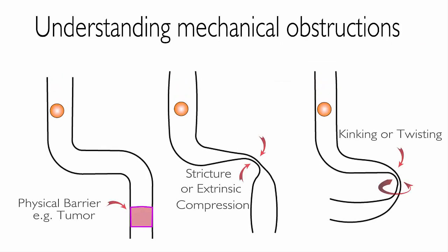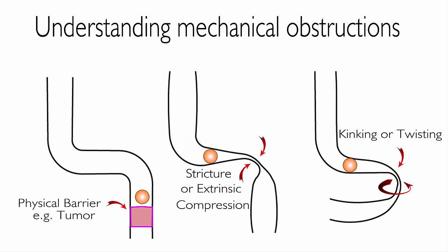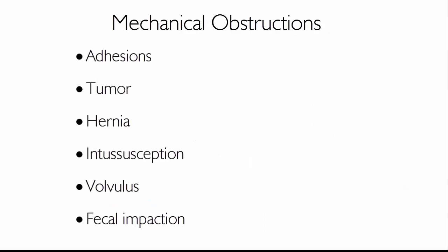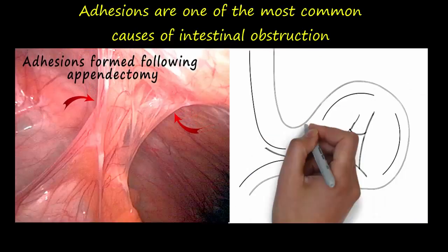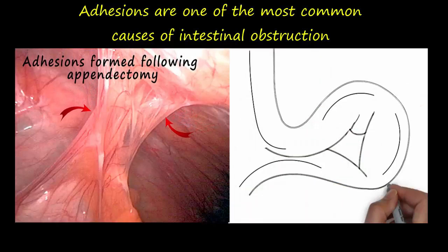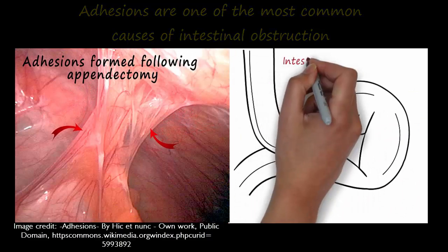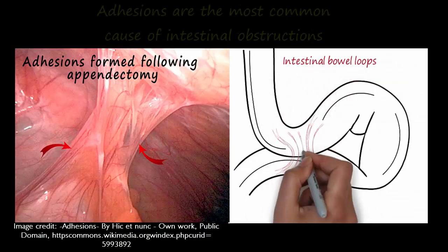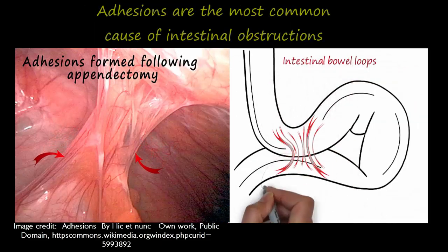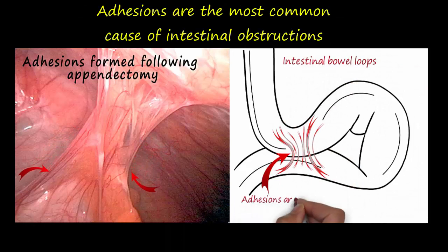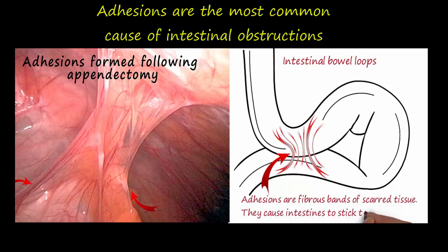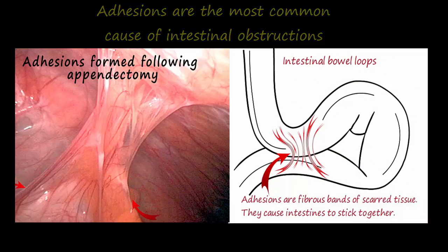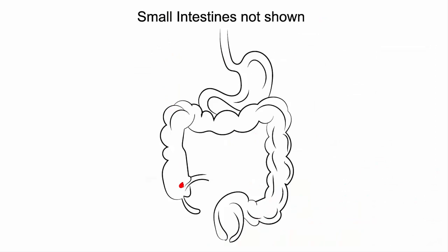Mechanical obstruction is caused by a physical barrier. Adhesions are fibrous bands of scarred tissue that develop within the abdominal cavity after surgery. The word adhesion comes from adhering, meaning sticking together, and adhesions cause tissues and organs to stick together. Adhesions are the most common cause of intestinal obstruction.